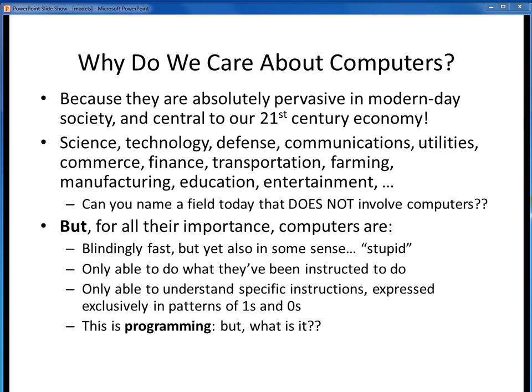But yet, despite their importance to our modern day way of life, computers actually do have some fundamental limits. Even though they are blindingly fast, in some sense, hard as it may be for us to think of it this way, computers really are kind of stupid. They can only do what they have been instructed to do, no more, no less. They can only execute the specific subset of instructions that their microprocessors allow. And finally, the only two things they understand are ones and zeros.